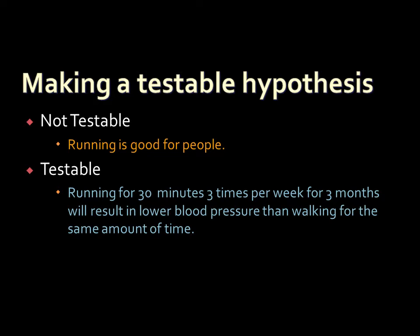A better testable hypothesis would be: 'Running for 30 minutes three times per week for three months will result in lower blood pressure than walking for the same amount of time.' This is testable because it specifies all the variables under study. We can see a particular time period and an outcome measure — in this case, blood pressure. That's what making a testable hypothesis means.